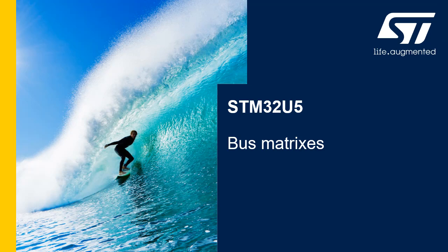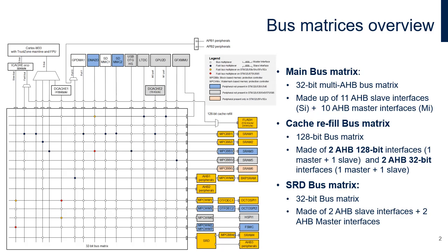Hello and welcome to this presentation of the bus matrices interconnecting masters and slaves in the STM32U5. The bus matrix provides access from a master to a slave, enabling concurrent access and efficient operation, even when several high-speed peripherals are working simultaneously. The STM32U5 ARM Cortex-M33 core is optimized for execution thanks to an instruction cache with direct access to flash through the fast master port.